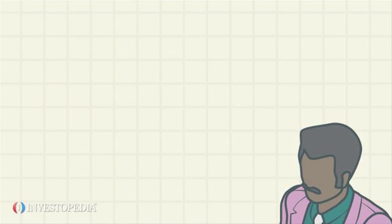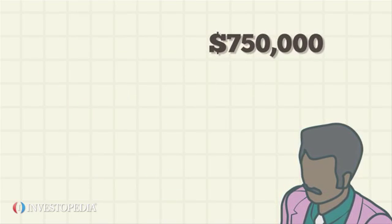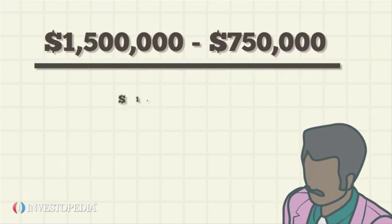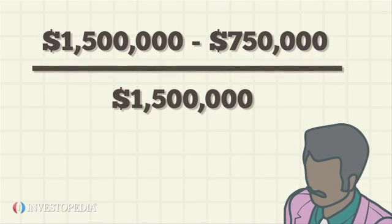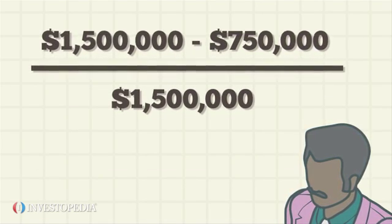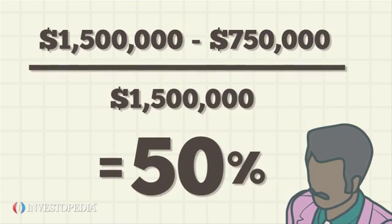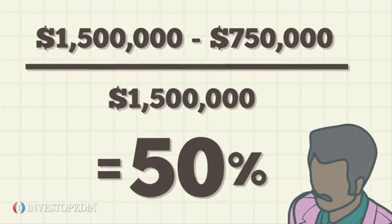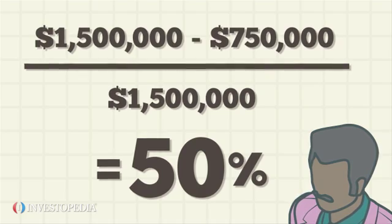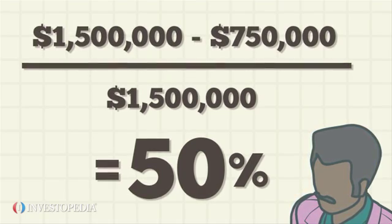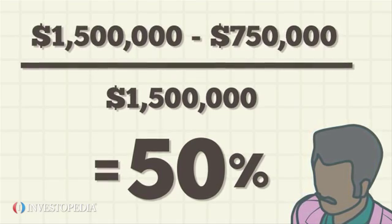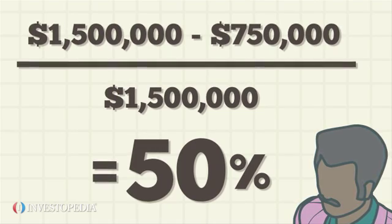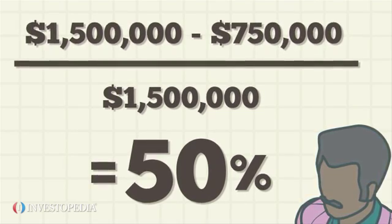If total variable costs are $750,000 and total sales are $1.5 million, the total contribution margin in ratio form will be 50%. The business could compare the contribution margins of individual products against the company's total contribution margin to determine which products to sell more of and which to sell less of.